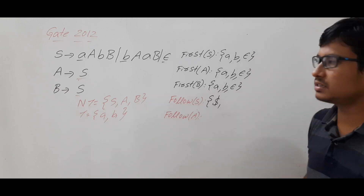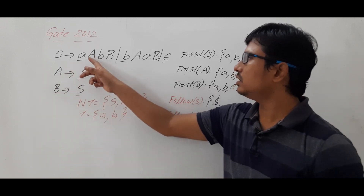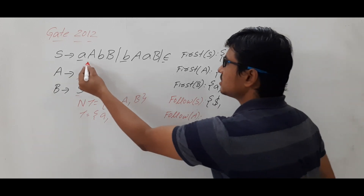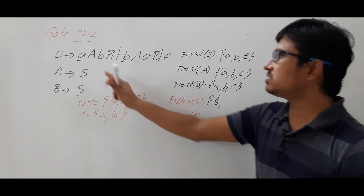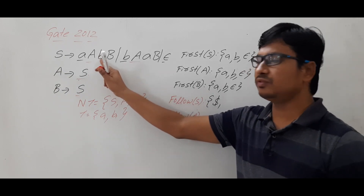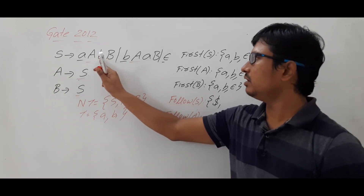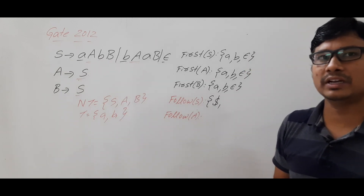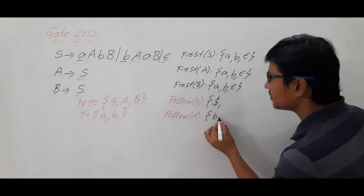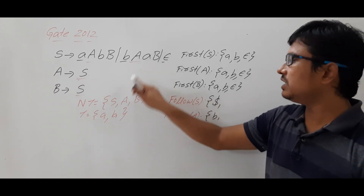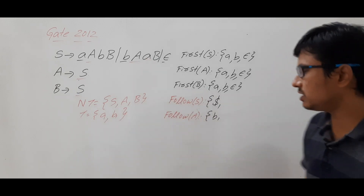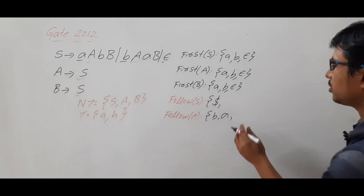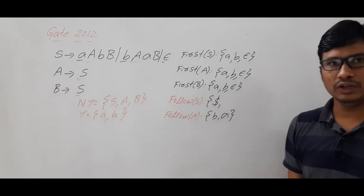Now FOLLOW of A — you need to look at where A appears in the right-hand side. Here A is there in one production and here in another. In one case, what follows A is B, which is a terminal, so FIRST of terminal is the terminal itself, giving us 'b'. Similarly in another production, what follows A is 'a', a terminal, so FIRST of 'a' is 'a' itself.